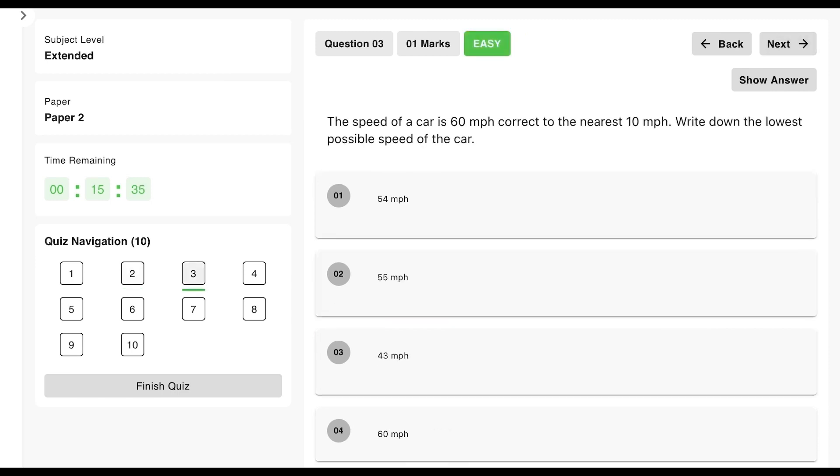Okay, and finally the last one. The speed of a car is 60 miles per hour correct to the nearest 10 miles per hour. Write down the lowest possible speed of the car. So this is about 10 miles per hour, so that means when I'm rounding to the nearest 10, the smallest it could have been is 55 and the highest it could have been is 65. Now we're looking at the lowest here, so the answer is 55 miles per hour.